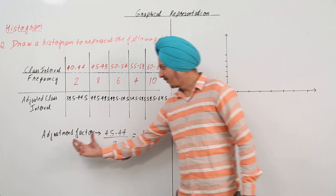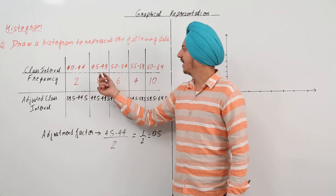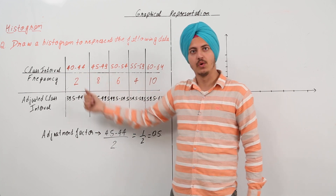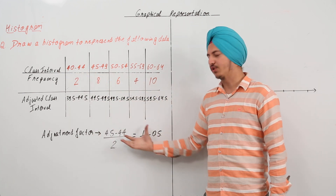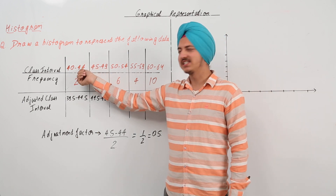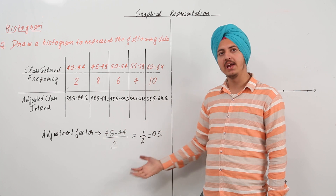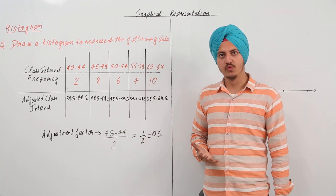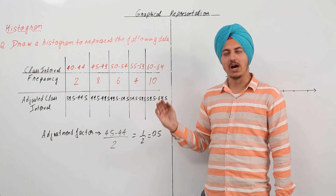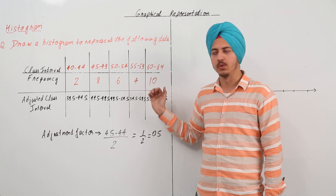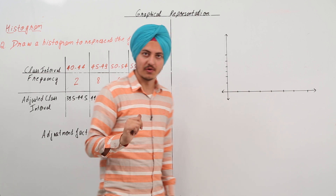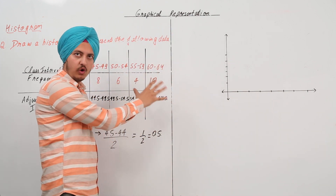So what do we do? We find the adjustment factor. The adjustment factor is the lower limit of the second interval minus the upper limit of the first interval divided by 2. We subtract the adjustment factor from the lower limit and add it to the upper limit in all the class intervals, and that will make the data continuous. Now we have continuous data and we have to represent this on the graph.